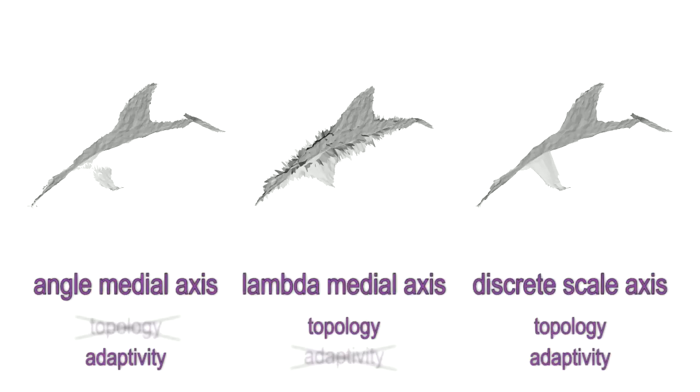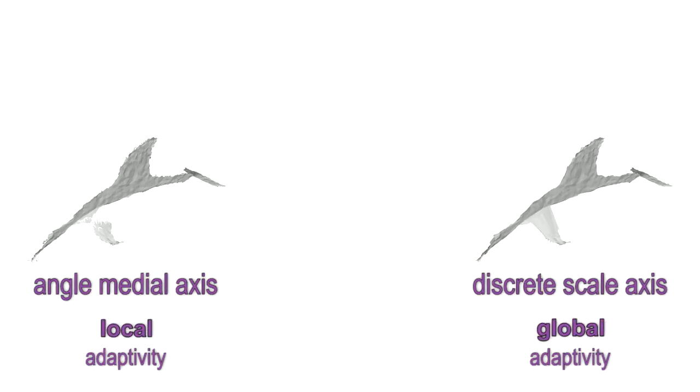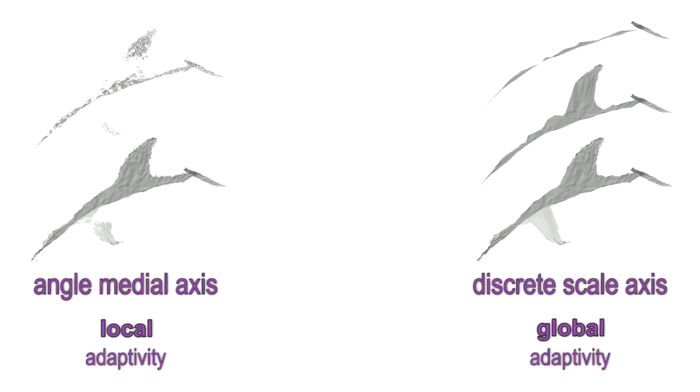We have seen that the scale axis has a nice topological behaviour, and additionally classifies features in an adaptive way — a combination which none of the previous methods have. This adaptive classification is done in the global context of the whole shape, not based on a local measure. Therefore, it is useful not only to separate shape features from noise, but to assign meaningful importance values to the shape features themselves.